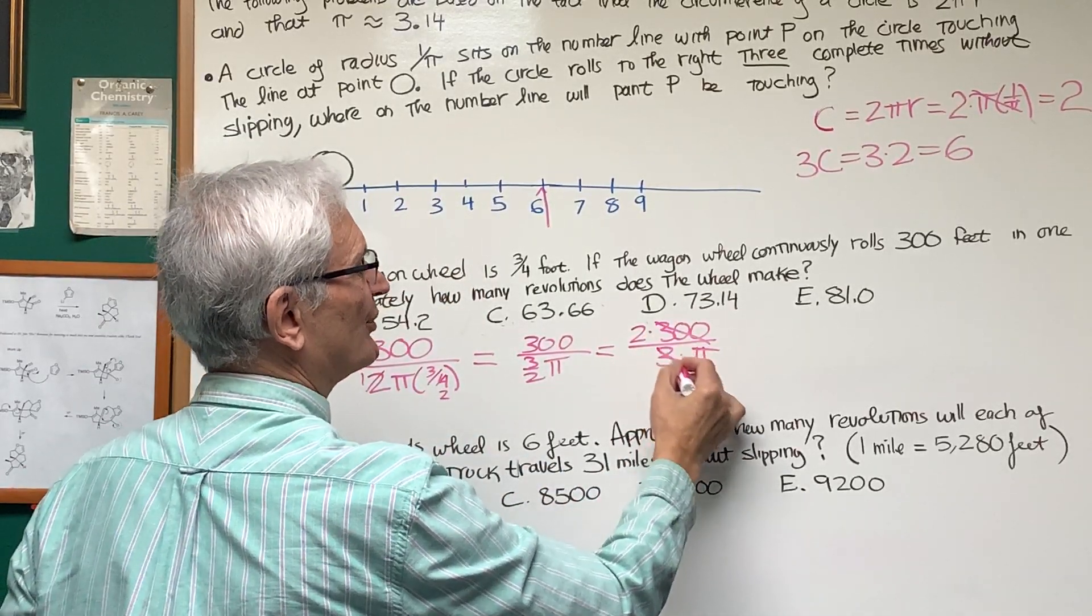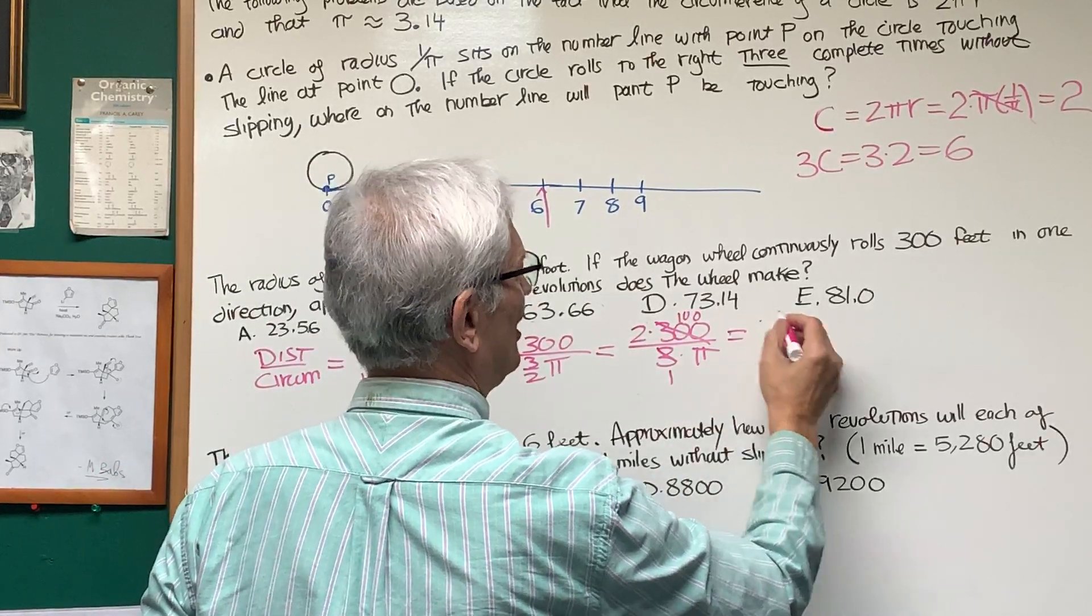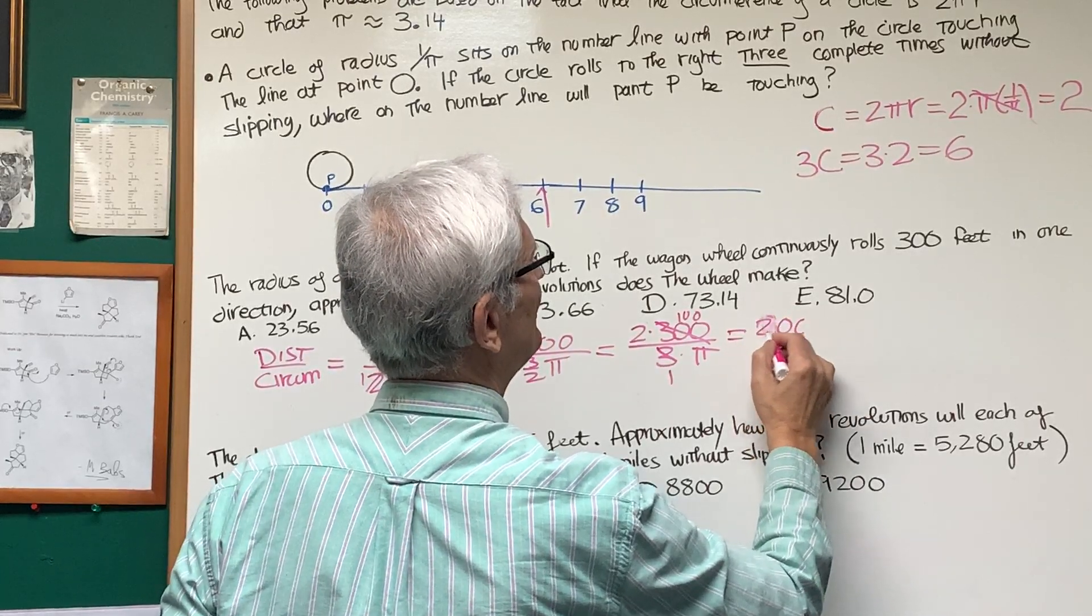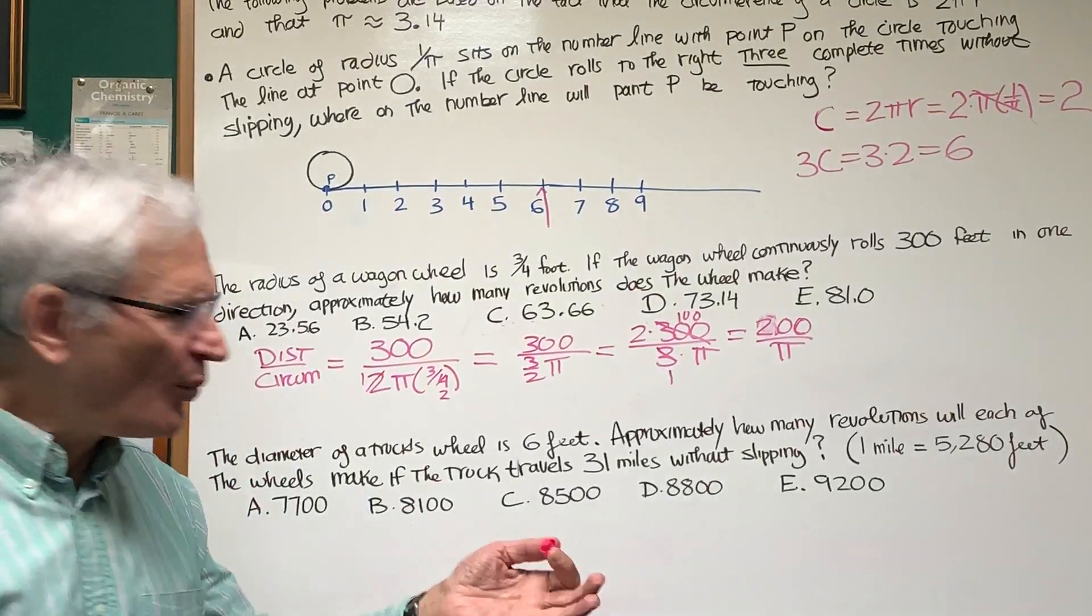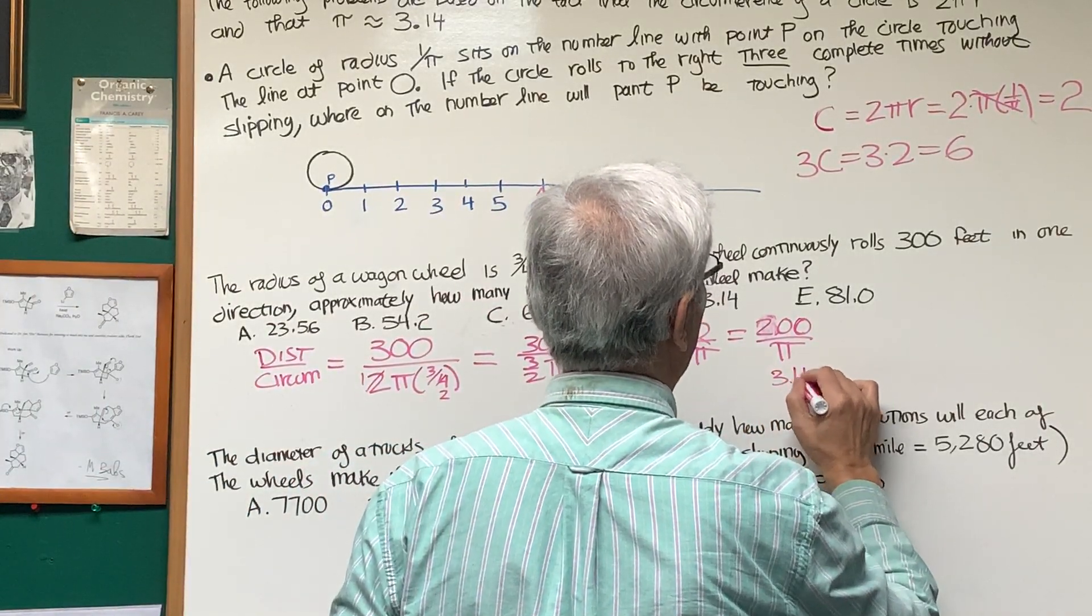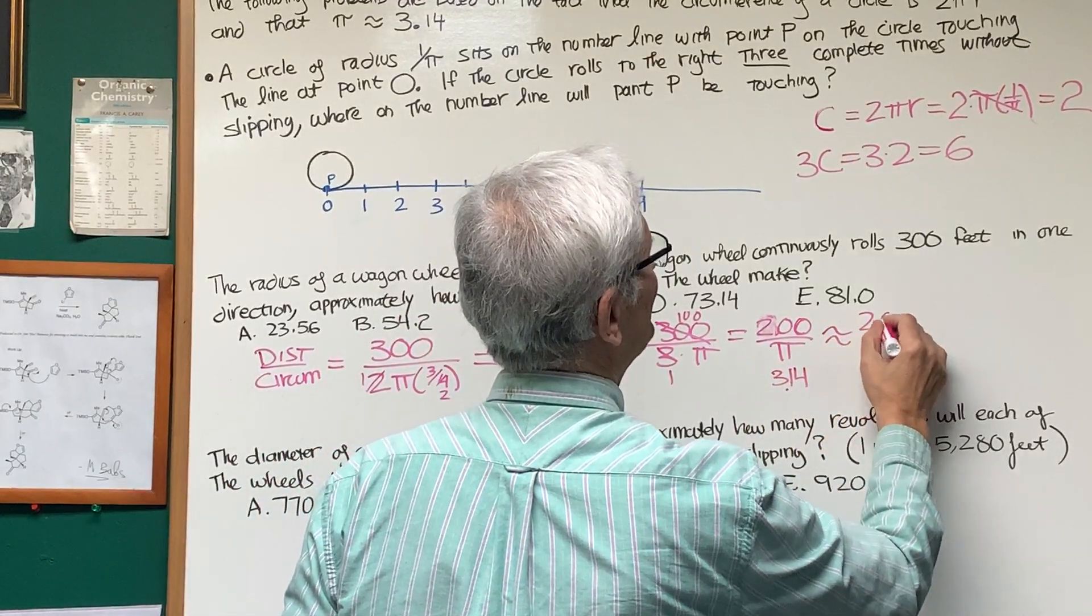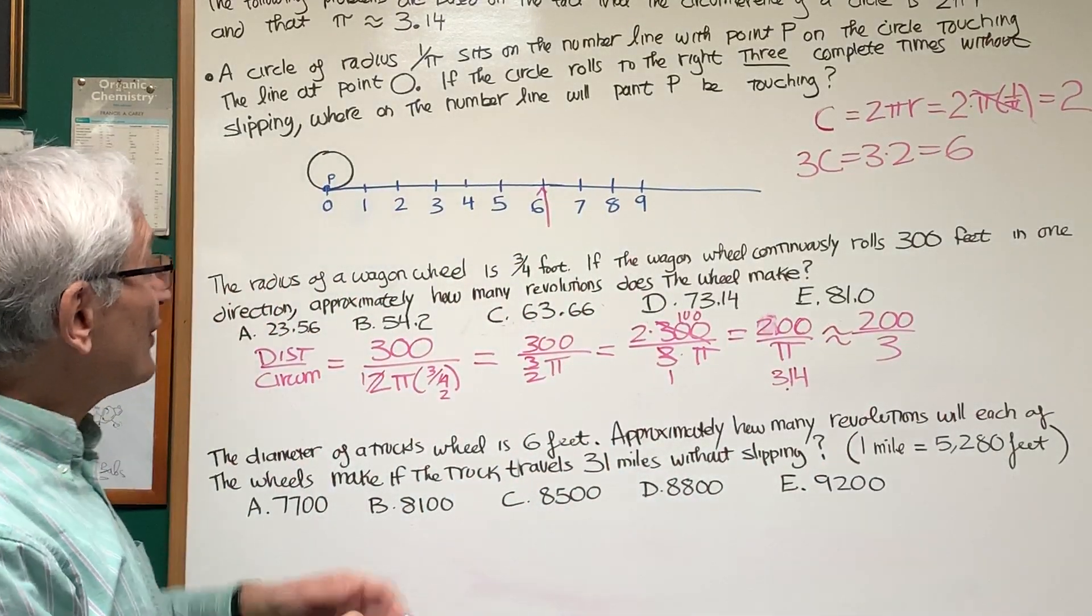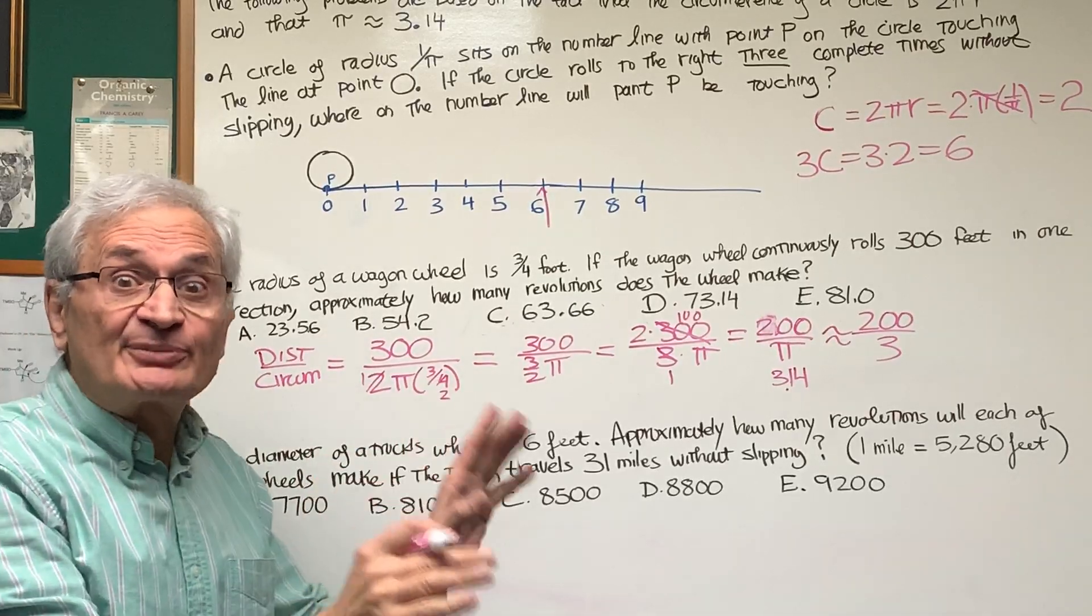And I can bring the 2 up to 2 times 300 divided by 3 times π. The 3 divides into 300 100 times. And I'm going to get 2 times 100 is 200 divided by π. Now π is equal to 3.14. That's going to be a very difficult division to make. So let's approximate this to 200 divided by 3, because the problem says approximately.